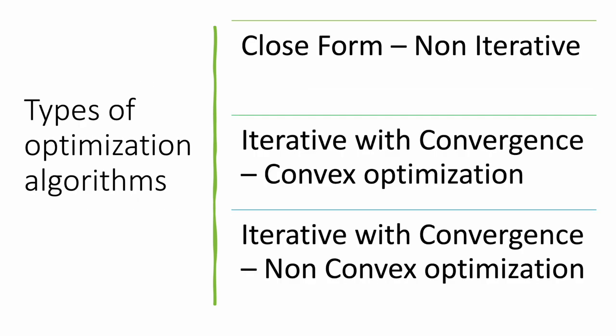What are the types of optimization algorithms available? The first is closed form and non-iterative. In high school algebra, we solve a quadratic equation, take the first derivative, equate it to zero, and solve. That is the closed form, non-iterative way. A true convex function will have a closed form solution — without iterative methods, you can work with the equation itself and find the minimum by taking the first derivative and equating to zero.